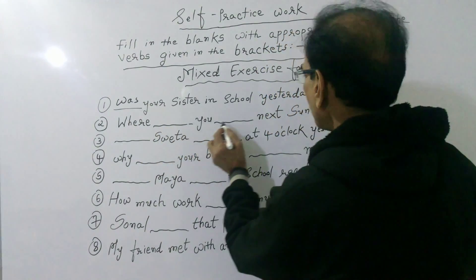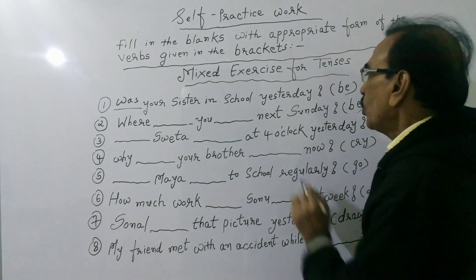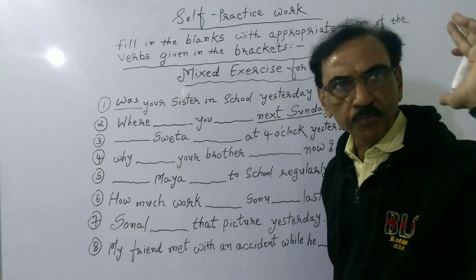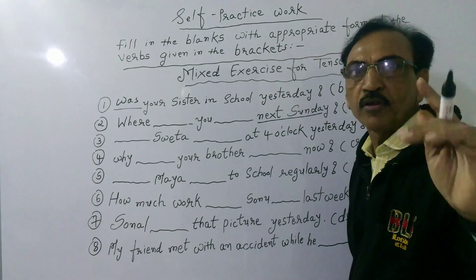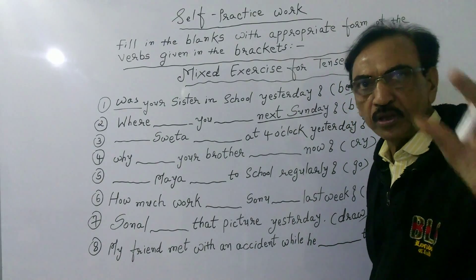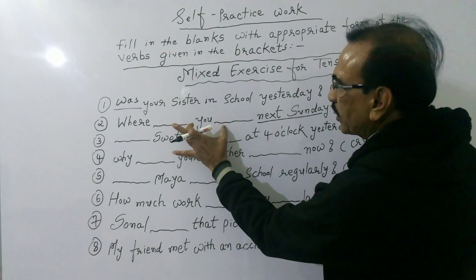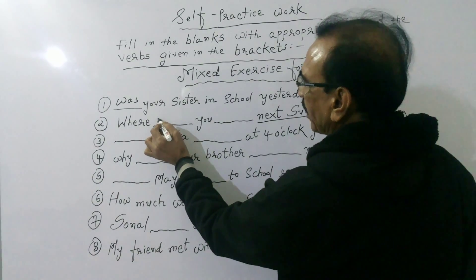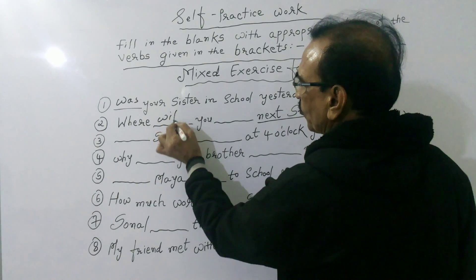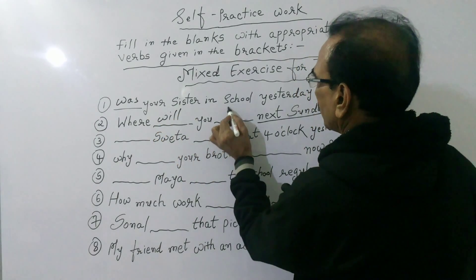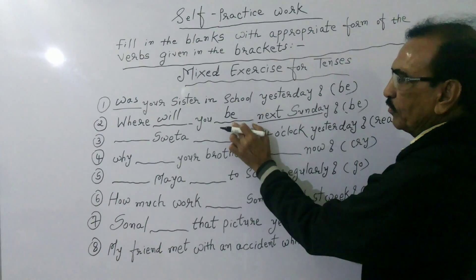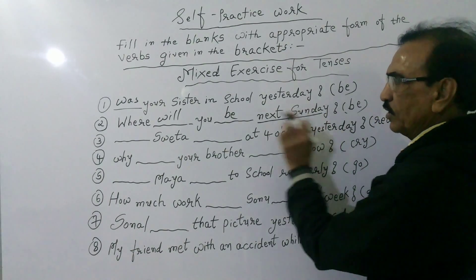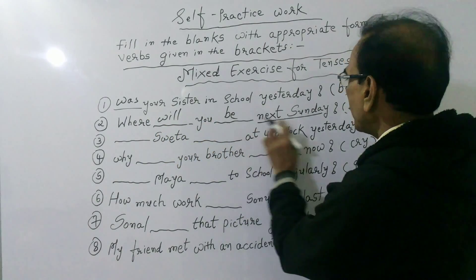Second sentence: Where dash you dash next Sunday? 'Next Sunday' denotes simple future tense. In simple future tense, we use 'shall' or 'will' with the basic form of the verb. Here two blank marks are there. In the first blank write 'will', and 'be' is the basic form. So the answer is: Where will you be next Sunday?